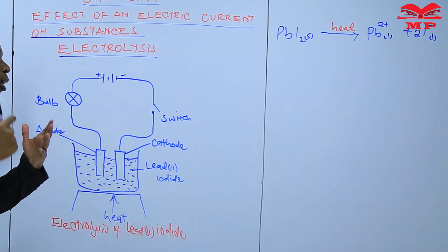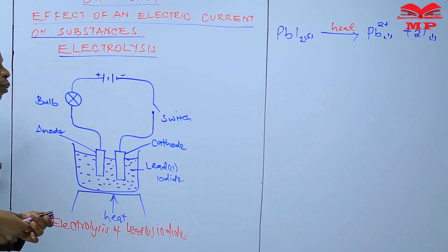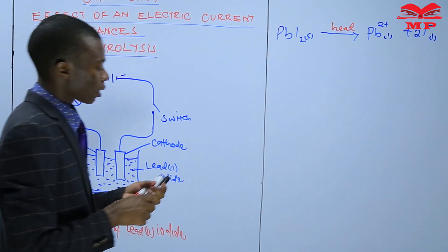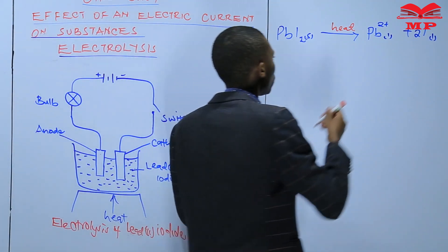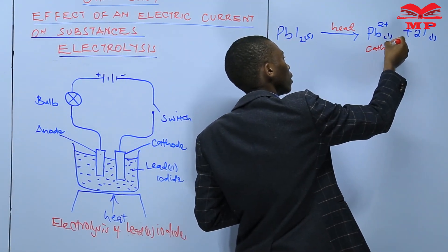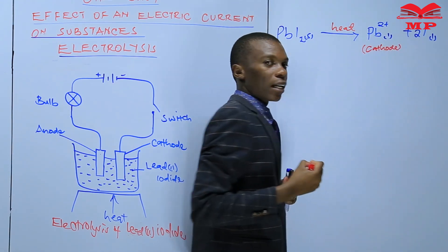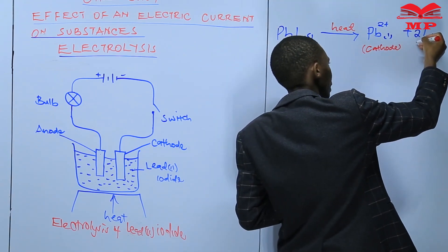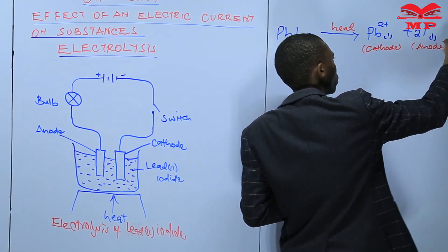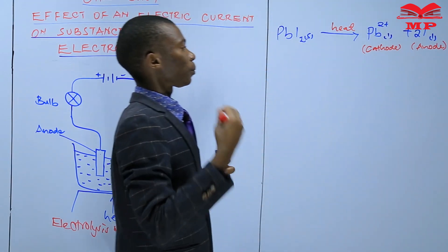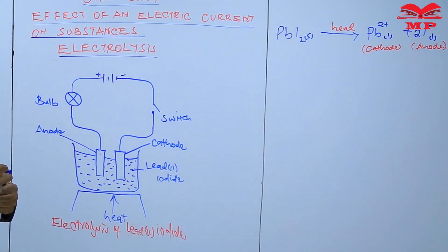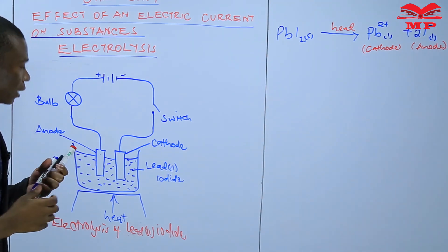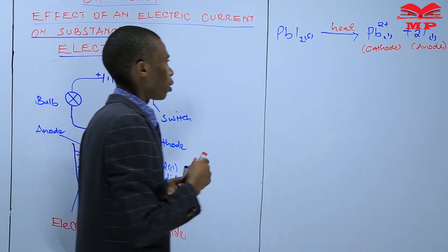The positively charged ions will be attracted at the cathode. Therefore, we expect the lead ions will be attracted at the cathode and will migrate to the cathode. The iodide ions will be attracted by the positively charged electrode, which is the anode, and they will migrate to the anode. Now, writing equations for what happens at the anode and the cathode.